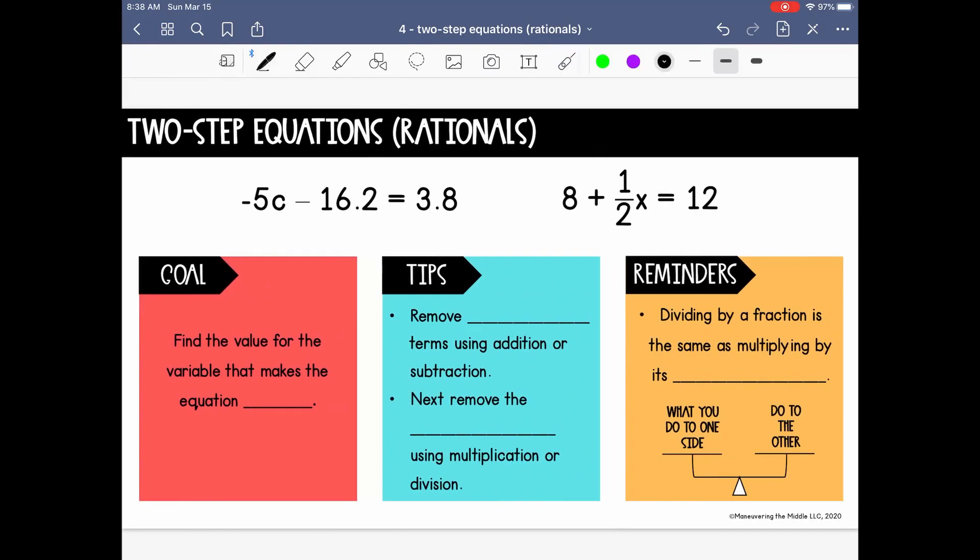When we're solving two-step equations, our goal is to find the value for the variable that makes the equation true. To do that, we need to isolate the variable, or in other words, get it by itself. And so to remove the other terms with the variable, you'll start with your constant. You want to remove constant terms by using addition or subtraction.